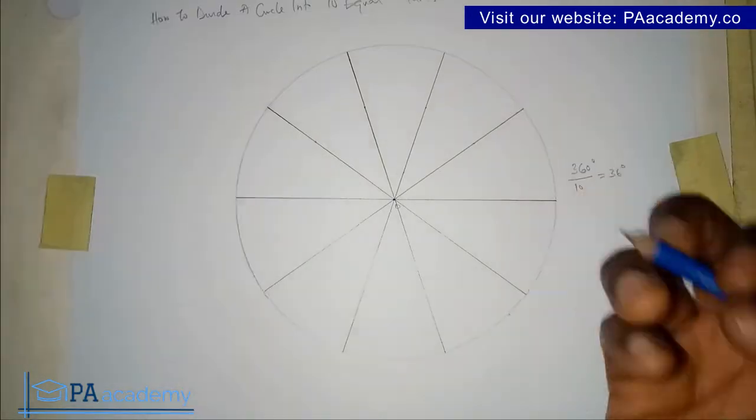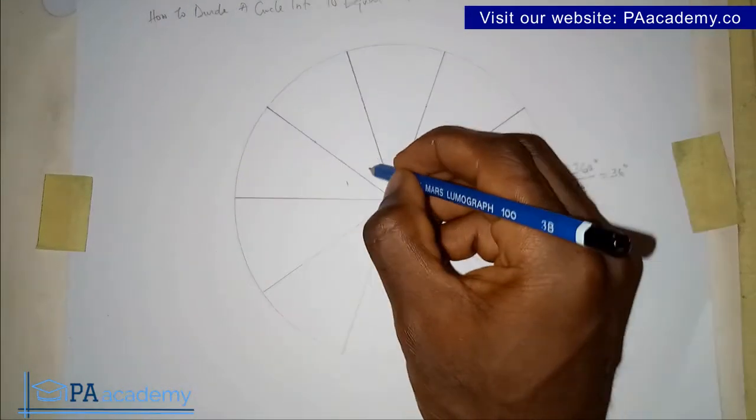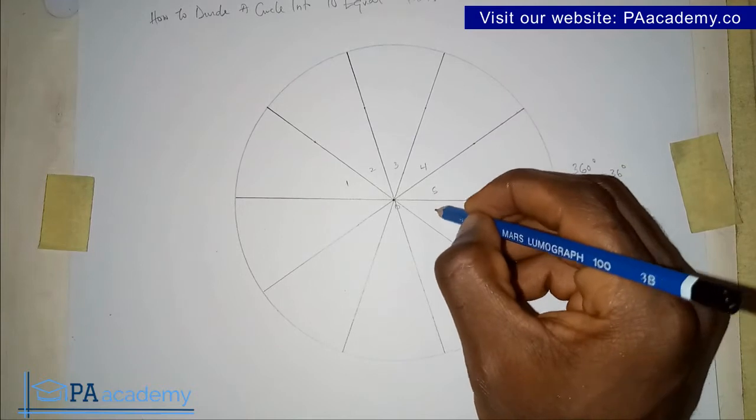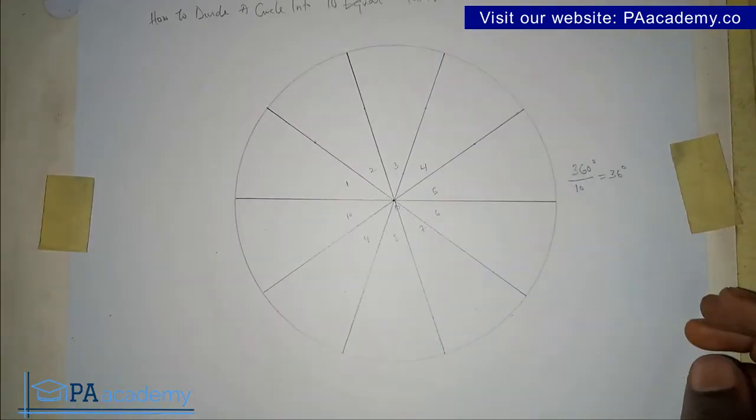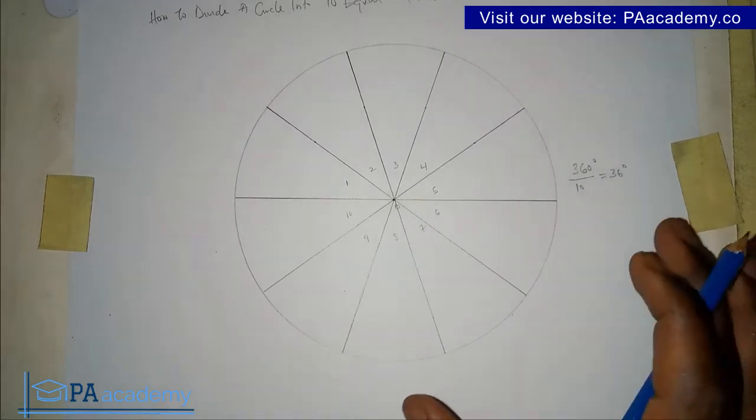With this, now we are having 10 equal parts. This is going to be one, two, three, four, five, six, seven, eight, nine, and ten. We've successfully divided this circle into 10 equal parts.